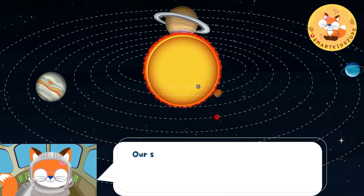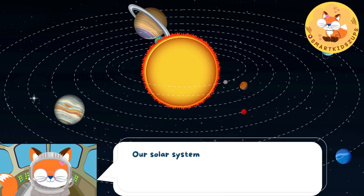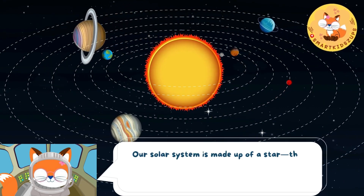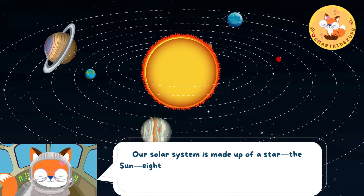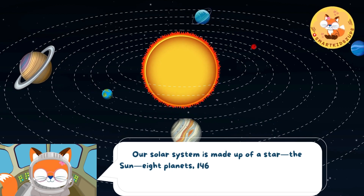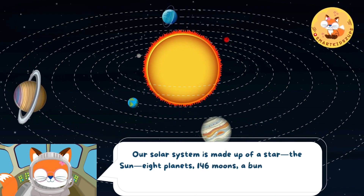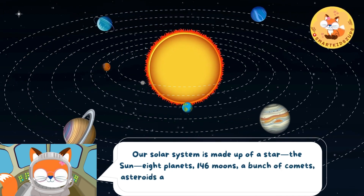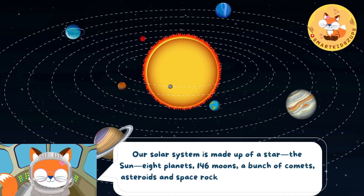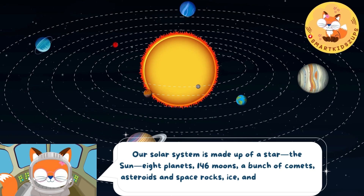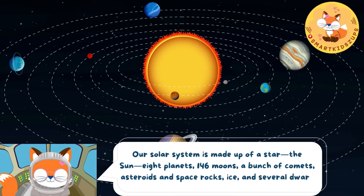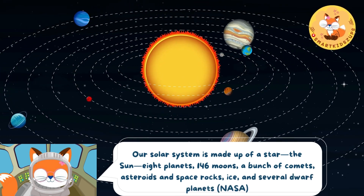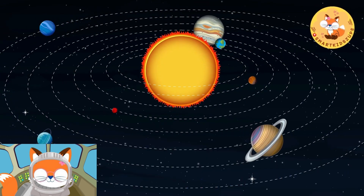The solar system is a gravitationally bound system of the sun and the objects that orbit it. Our solar system is made up of a star — the sun — eight planets, 146 moons, a bunch of comets, asteroids and space rocks, ice, and several dwarf planets. NASA.